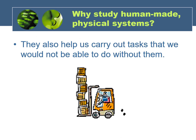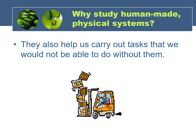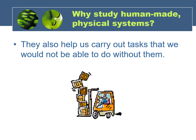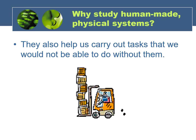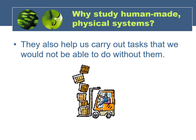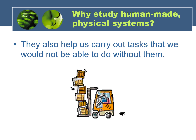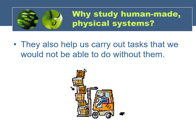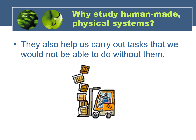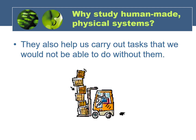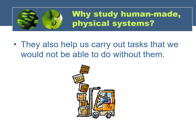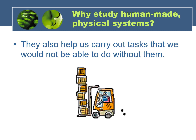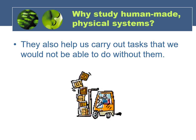Human-made physical systems also help us carry out tasks that we would never be able to do on our own because we're just not strong enough to generate the amount of force needed to lift or move something. For example, in warehouses, you'll often see forklifts being used to transport heavy crates. One person might not be strong enough to lift and move a crate by him or herself, but is able to carry out the same job using a forklift.